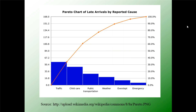Here's an example constructed to show causes of late arrivals — whether late arrivals of employees to work, students to class, or whatever. We have a list of possible causes: traffic, child care, public transportation, weather, and so on. The bar graph plots the number of instances each cause has occurred — you can plot either the number or the percentage — and the bars are ordered by most frequent. Traffic is the leading cause of late arrivals, with child care next and public transportation third. The basic idea is that 20% of these causes will result in 80% of the late arrivals.